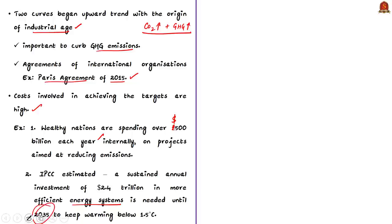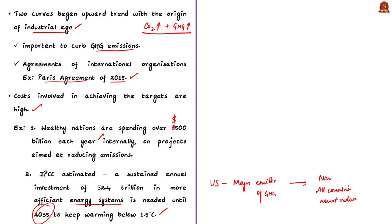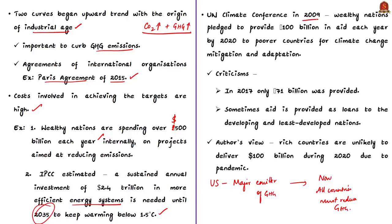The Intergovernmental Panel on Climate Change estimated that sustained annual investment of about $2.4 trillion in more energy-efficient systems is required until 2035 to keep global warming well below 1.5 degrees Celsius. These kinds of investment are possible for wealthy developed nations but not for developing or least developed nations. Notably, developed countries like the USA were the major emitters of greenhouse gases that caused global warming, yet now every country has the onus to reduce emissions. At the UN Climate Conference at Copenhagen in 2009 (COP15), wealthy nations agreed to pay other countries to cope with climate change.